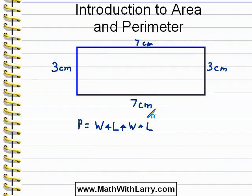So in the case of this rectangle, it's 3 plus 7 plus 3 plus 7, which is 20. And I have to retain my units. The perimeter is 20 centimeters.